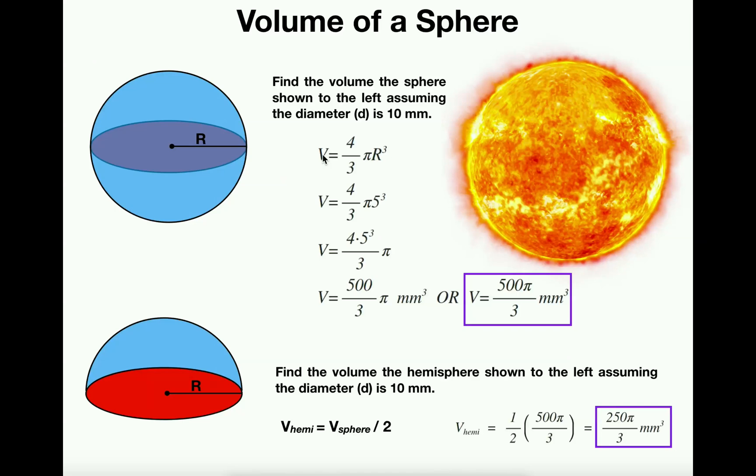Now here is the formula for the volume of the sphere. The volume is four-thirds pi r cubed. Unfortunately this is a formula that's not really intuitive, so you kind of just have to memorize this.